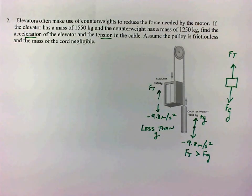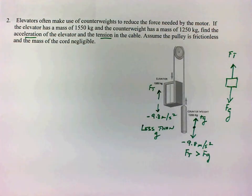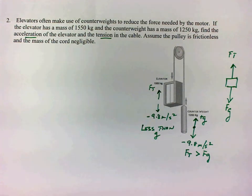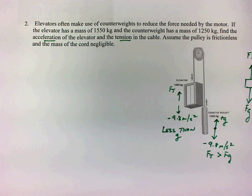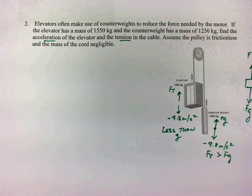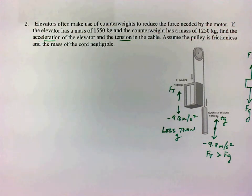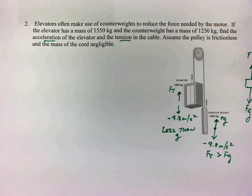Conceptually, that's the way we want to look at this — it's going to help us when we solve for the tension in the cable. To solve for the acceleration of the system, we have two forces in the downward direction: FG of the elevator and FG of the counterweight. Those are the two forces we're concerned with when dealing with the acceleration.